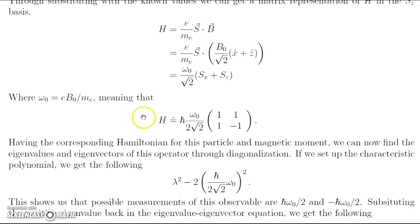This gives us the following representation of the Hamiltonian, which is equal to ℏ times omega_0 over 2 root 2, times the matrix (1, 1; 1, -1). Now that we have the corresponding Hamiltonian for this particle in the magnetic moment, we can find the eigenvalues and eigenvectors through diagonalization. In doing this, we can then find the corresponding energy eigenstates, and then we can look at our system from there and get the probability that we desire.